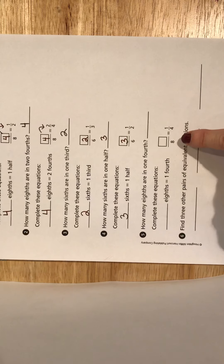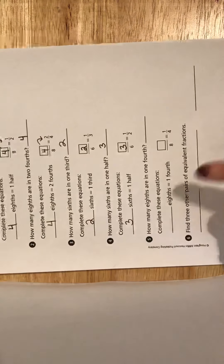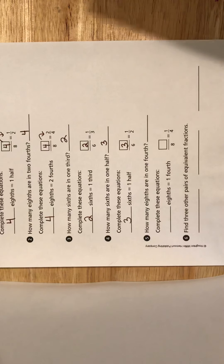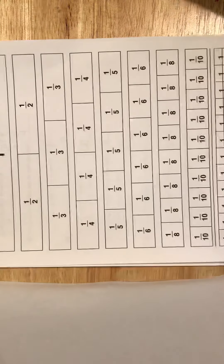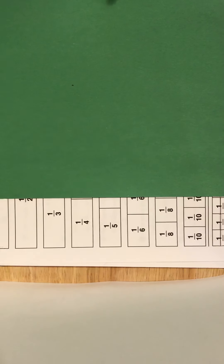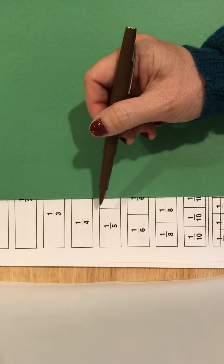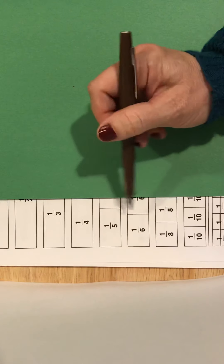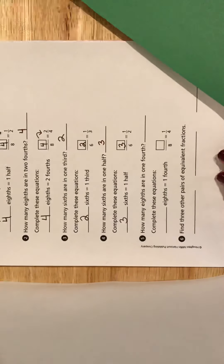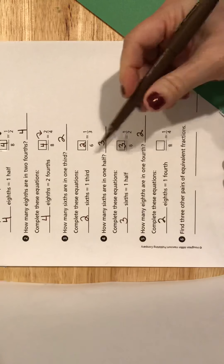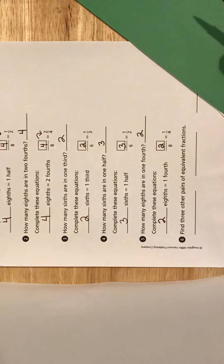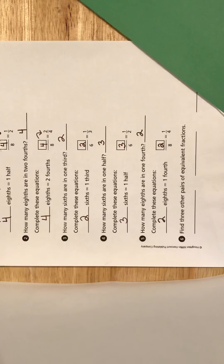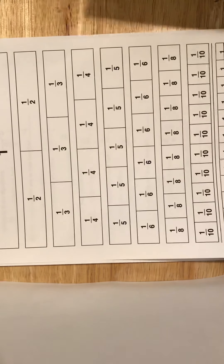Now one more for eighths: how many eighths are in one fourth? I'm going to go back to my fraction strip paper and find one fourth. How many eighths are equal to one fourth? It looks like two. Two eighths equals one fourth. So that's a little bit of practice on how you find fractions using the fraction strips on a paper like this.